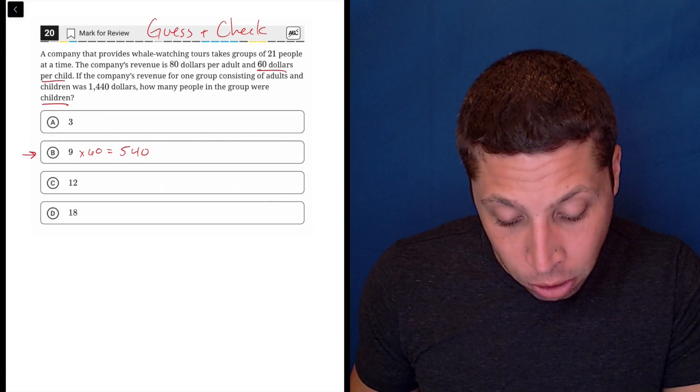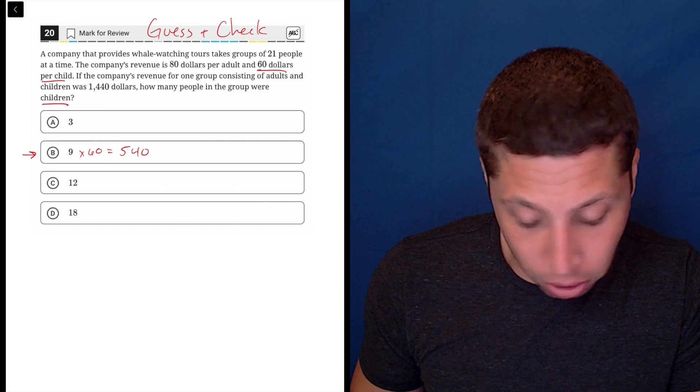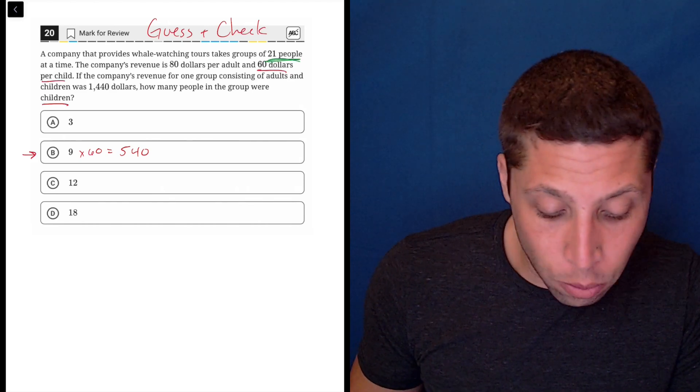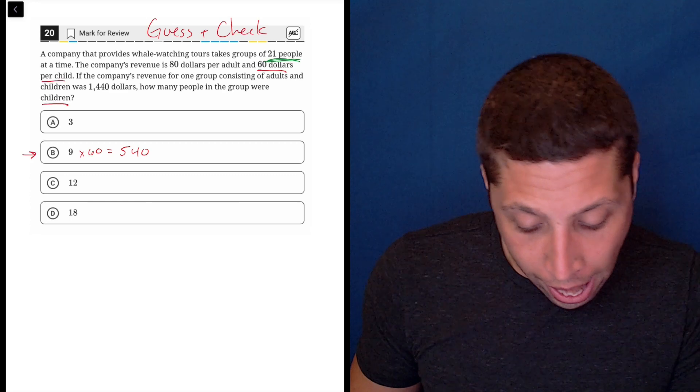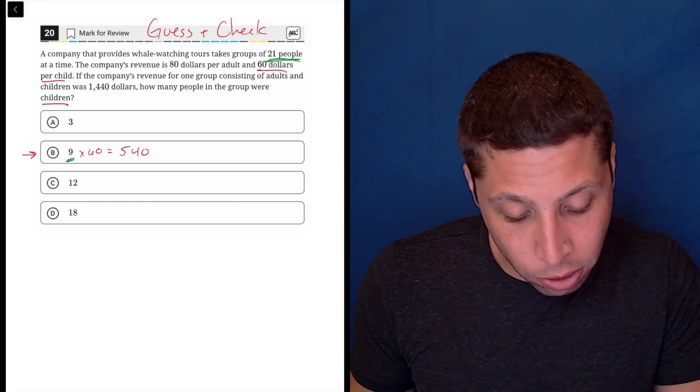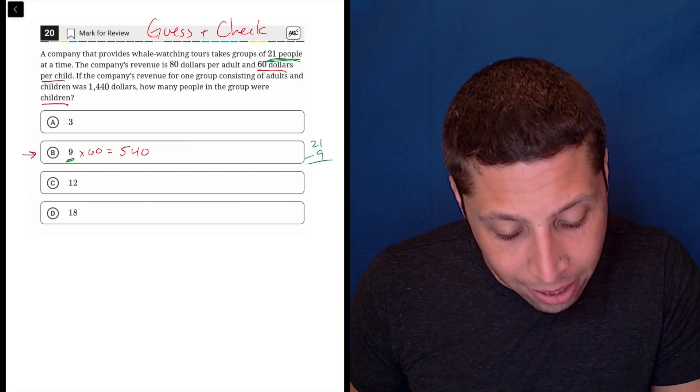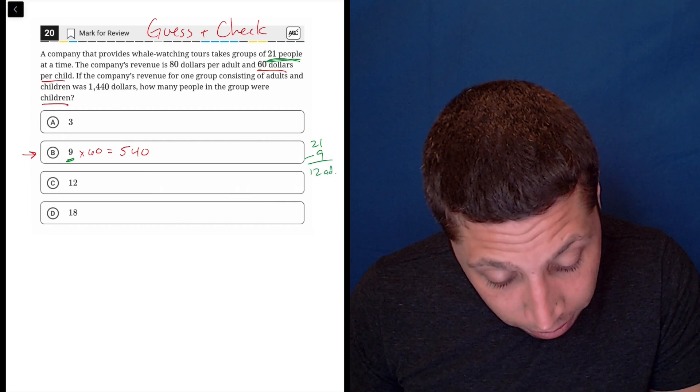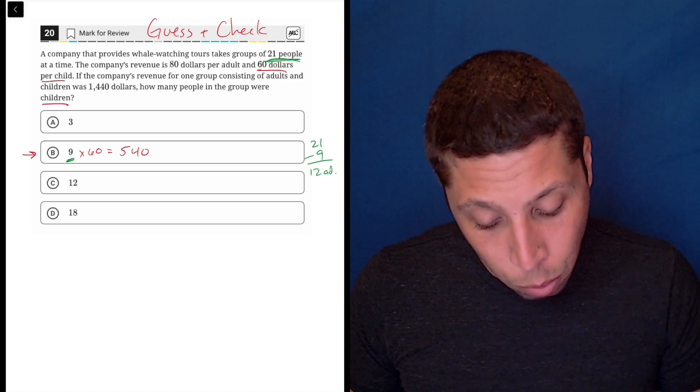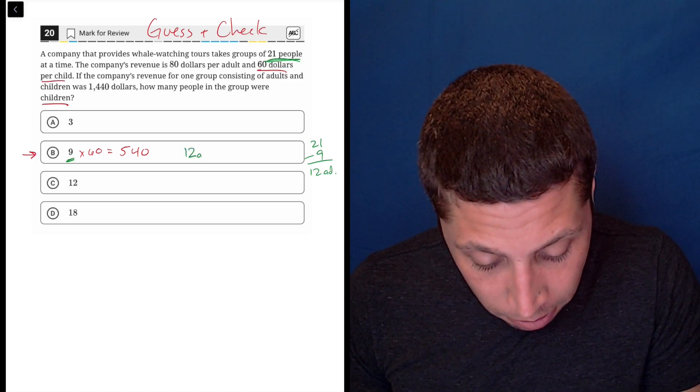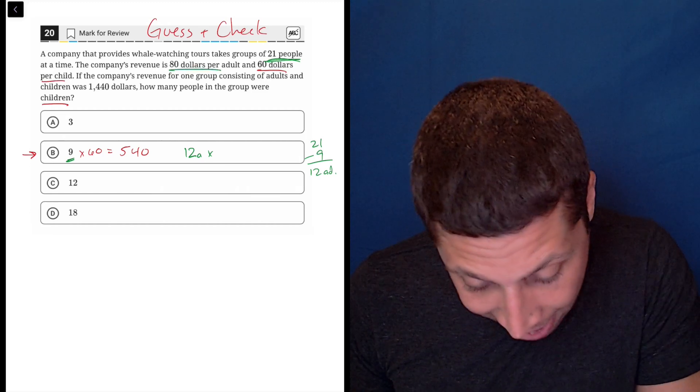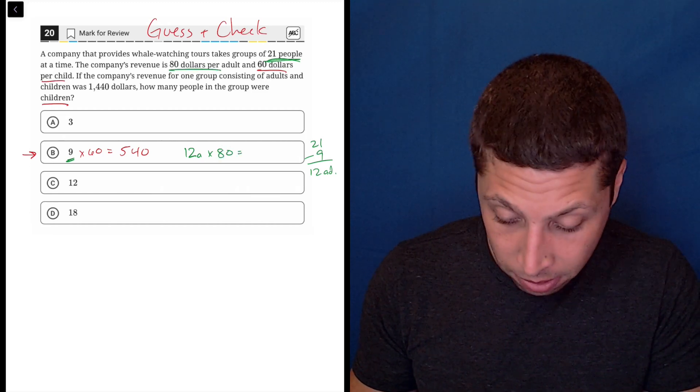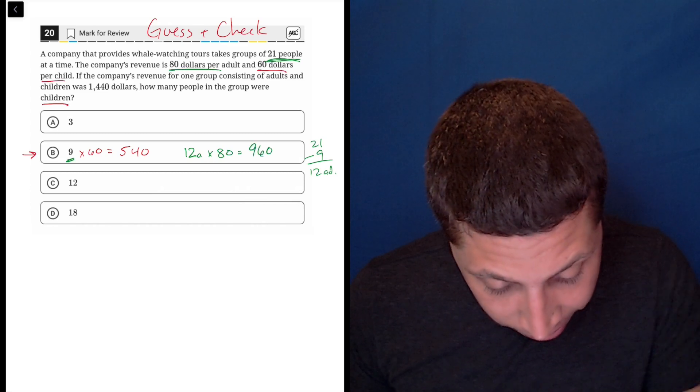Well, the next place I would go, I like to do addition and multiplication rather than any subtraction or division. So there's 21 people and I've already got nine of them accounted for. So 21 minus the nine children leaves me with 12 adults. So 12 adults cost $80 each.